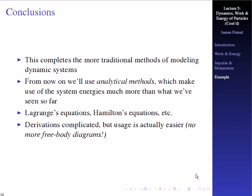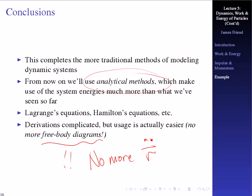This completes some more traditional methods of modeling dynamic systems. This is the last you'll see of this approach in this course until we prepare for the exam. From now on, we're going to use analytical methods which make use of system energies much more — Lagrange's equations, Hamilton's equations, and so forth. The derivations are complicated, but the usage is actually much easier. There are no more free body diagrams, and no more R double-dot — we don't have to worry about finding accelerations anymore; all we need are the velocities. That's the end of lecture number five. Thank you.